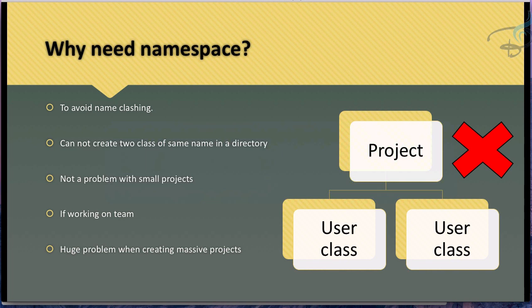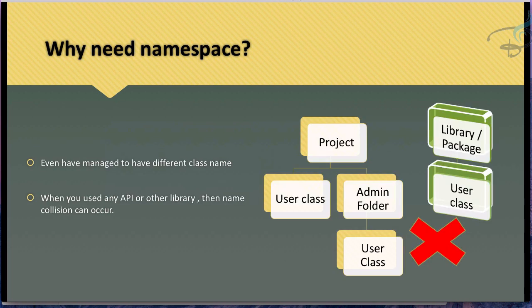You cannot create two files with the same name in a folder, and you cannot have the same class name in a single directory. This is not a big deal for a small project, but if you are working on a big project or in a team, you will have problems because class names will clash and collide.